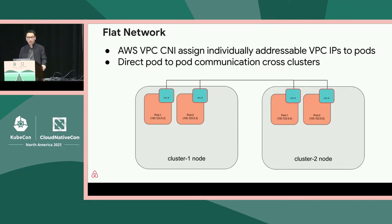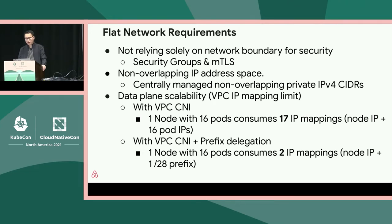By providing pods with VPC IPs, we can leverage the rich functionality cloud providers have built — for example, assigning pods custom security groups. Flat network does come with requirements. First, your organization should not rely solely on network boundary as the only security measure. At Airbnb, our flat network is segregated into different security zones with security groups, and within the flat network we follow a zero-trust model where all workloads are protected by mTLS. Secondly, a flat network requires all workloads to use non-overlapping IPs. We centrally manage our private CIDR ranges and allocated /10 CIDR blocks for mesh workloads, fitting 8 million IPv4 IPs.